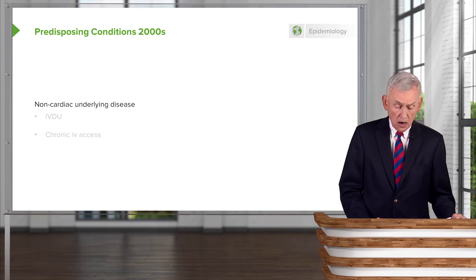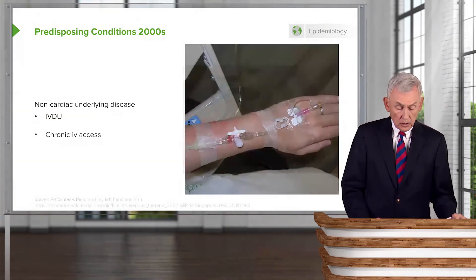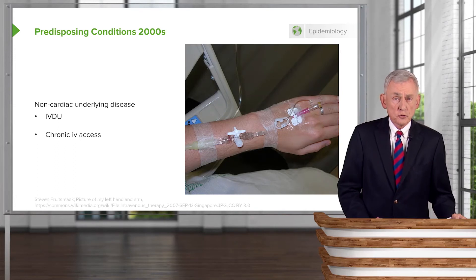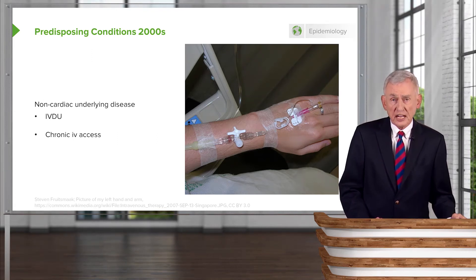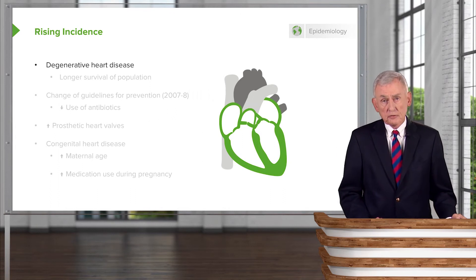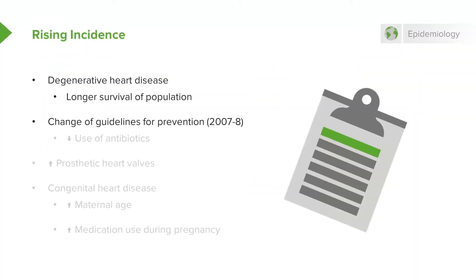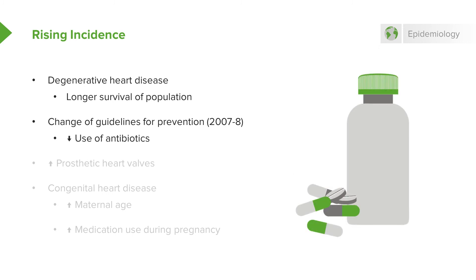In terms of non-cardiac underlying disease, IV drug use is still quite prevalent, as is chronic IV access. As we treat serious disease and maintain IVs in patients, we're keeping them alive longer — long enough to get infections of these intravenous devices. Degenerative valve lesions are associated with the longer survival of the population. There's also been an increase in endocarditis based on the 2007-2008 guidelines for preventing endocarditis, as we're not using antibiotics as much.